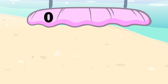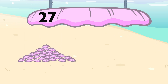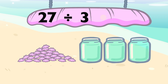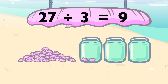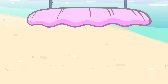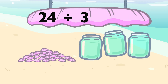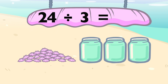0 divided by 3 equals 0. 27 divided by 3 equals 9. 24 divided by 3 equals 8.